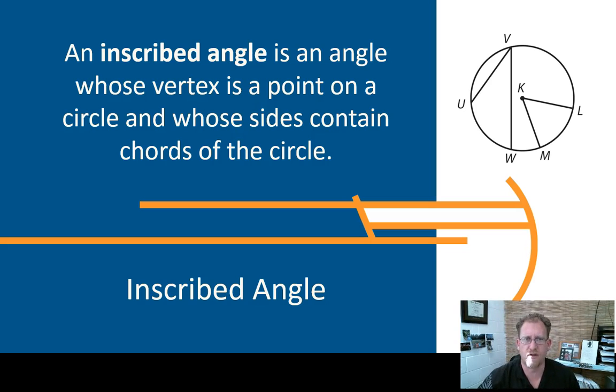So a central angle makes sense. The central angle vertex is in the center of the circle, and so the circle K here, angle MKL or LKM is a central angle, and the degree measure of this angle is the same as the degree measure of arc.